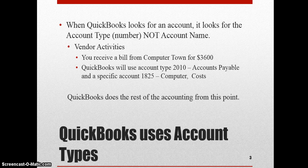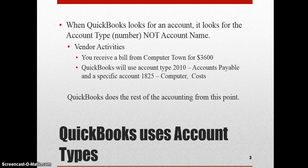When we have vendor activities, what happens is you receive a bill — say the bill is from Computer Town for $3,600. QuickBooks would use account type 2010, which is an accounts payable account, and a specific account which is the cost of computers, and this may be $1,825. QuickBooks does the rest of the accounting from this point on.